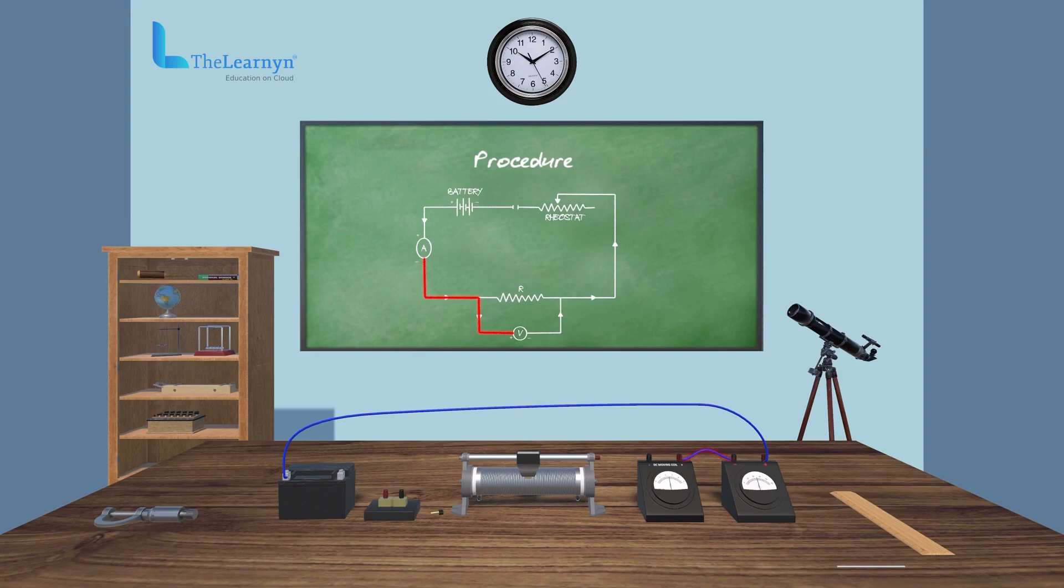The negative terminal of voltmeter is connected to the upper terminal of rheostat using a wire. Now, connect the lower terminal of the rheostat to one end of the 1-way key. The key should be removed using a connecting wire.